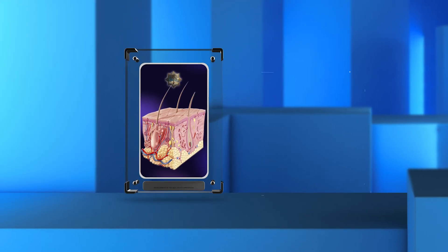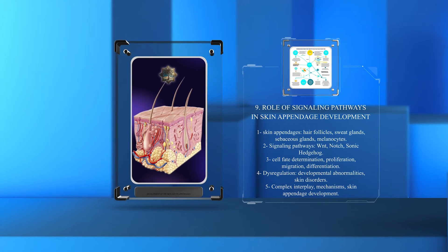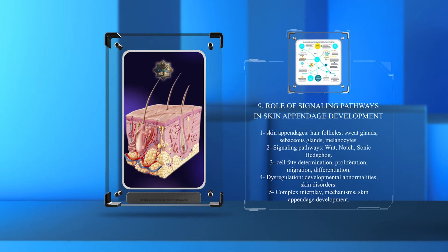The development of various skin appendages, including hair follicles, sweat glands, sebaceous glands, and melanocytes, is intricately regulated by a network of signaling pathways.